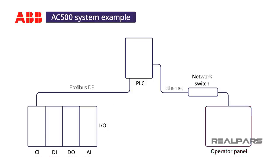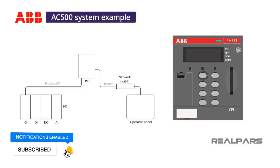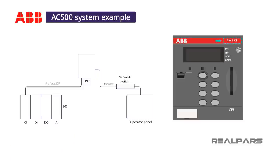I consult the latest ABB PLC automation catalog to learn more about the hardware offered in the AC500 product line and the specifications for each device. First, I select a CPU that will be able to handle the communication interfaces and the small number of I/O points in my system. I choose the PM583 ETH CPU, which comes with 1 MB of memory, one Ethernet port, and two serial ports.